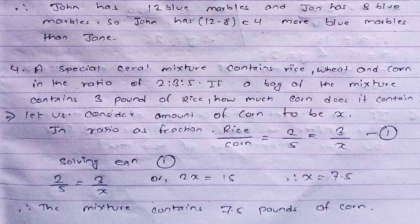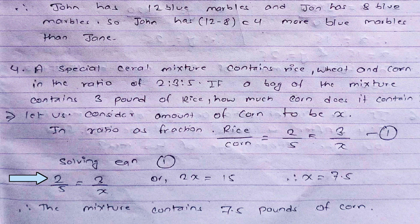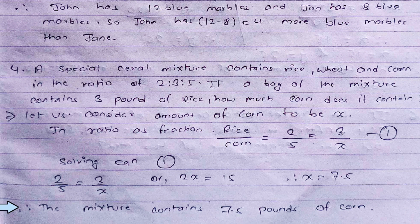The fourth question: a special cereal mixture contains rice, wheat, and corn in the ratio 2 to 3 to 5. If a bag of the mixture contains 3 pounds of rice, how many pounds of corn does it contain? We assume the amount of corn to be x. Rice to corn ratio is 2 to 5, so 2 divided by 5 equals 3 divided by x. Cross multiplying gives 2x equals 15, therefore x equals 7.5. The mixture contains 7.5 pounds of corn.